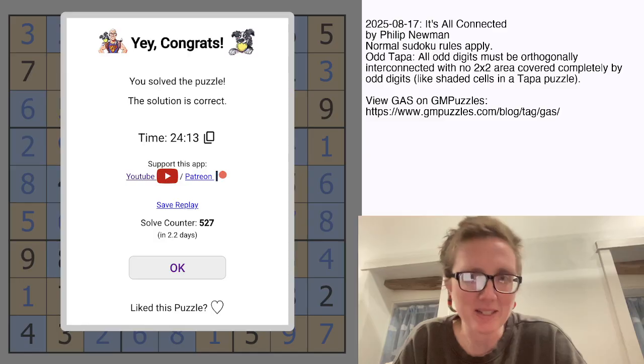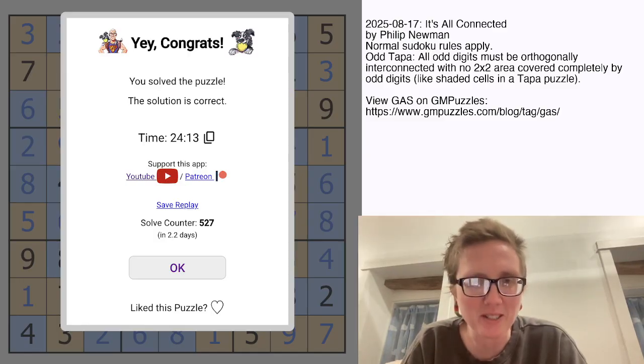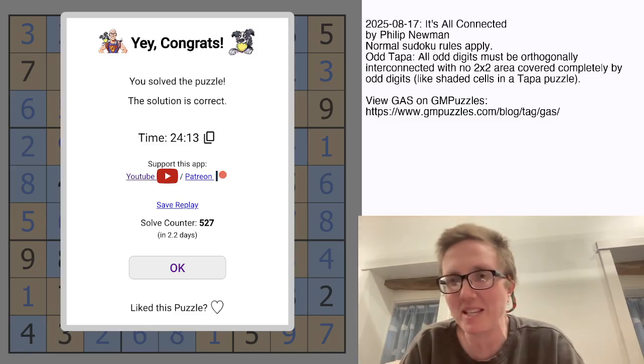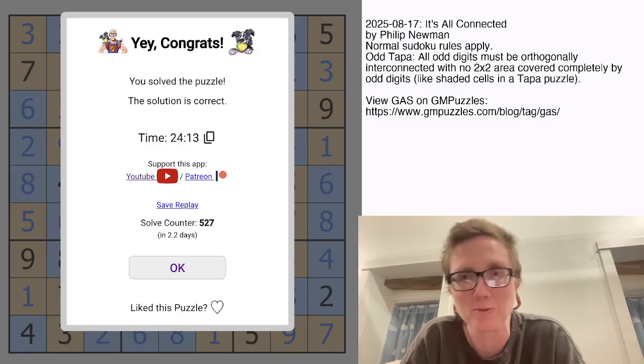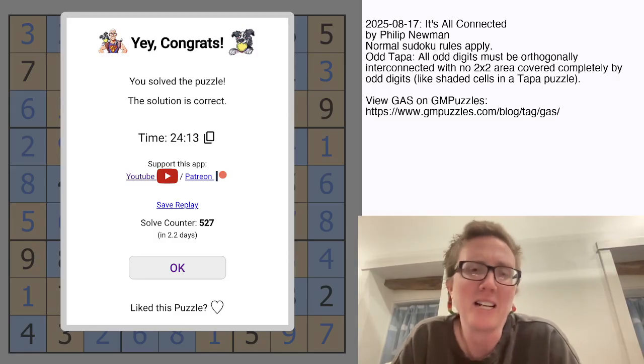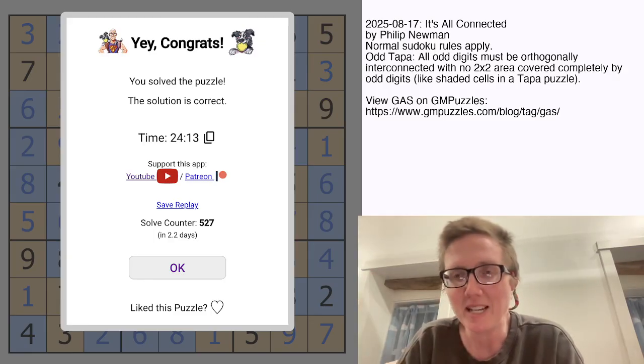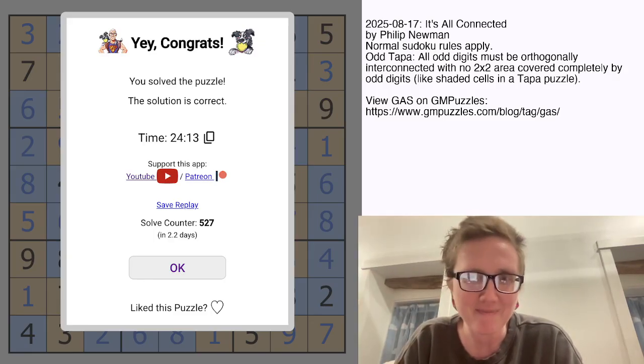And that is how you solve It's All Connected by Philip Newman. I really enjoyed that one, even though it was a little bit more challenging than usual. Hybrid puzzles can be kind of tricky because you need the rules, the types of logic that belong to both Sudoku and another puzzle type, in this case, Tapa. But yeah, I really enjoyed that one. I think that was really nicely designed. And if you want to solve it yourself, the link is in the description of this video. And I will see you again in three days.